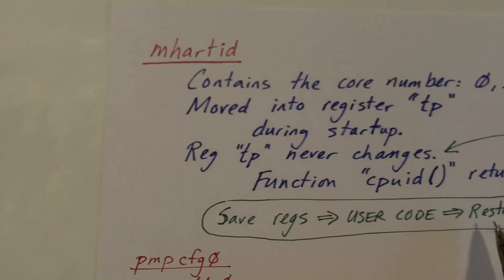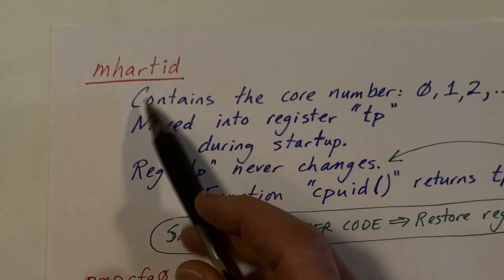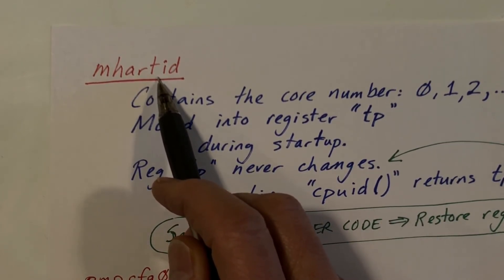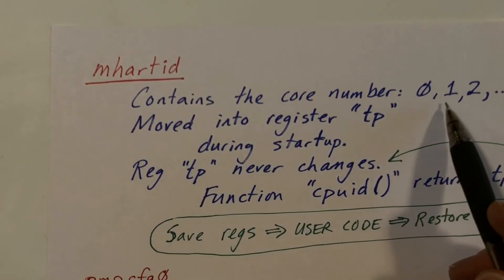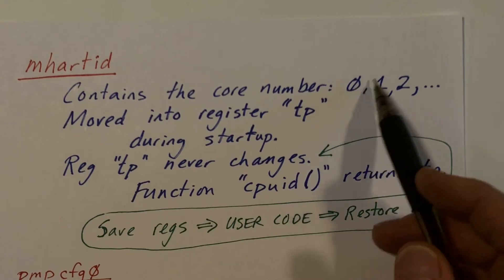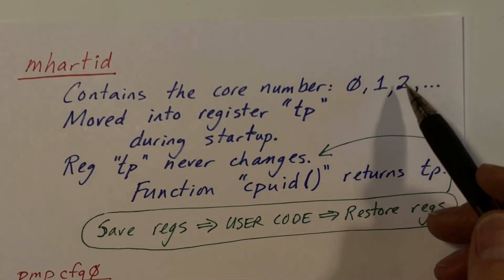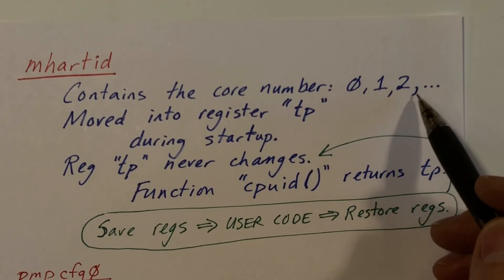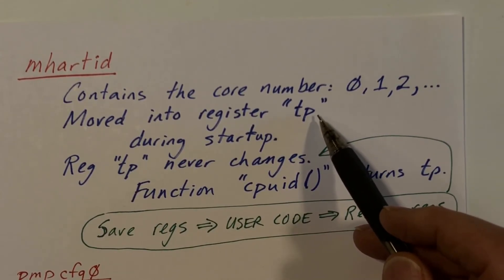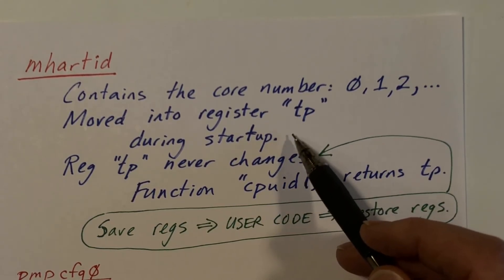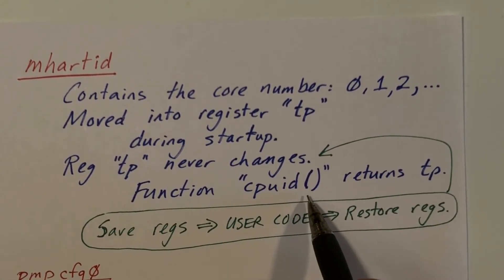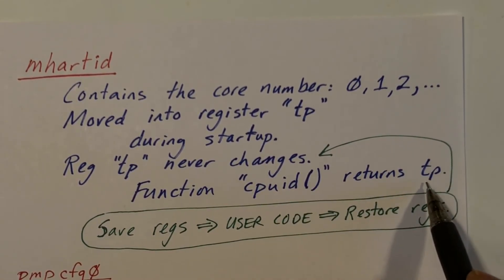Finally in this video, let me talk about three registers. The hart is synonymous with the core or processor number. The mhartid register contains the core number. Each core has its own separate set of registers. The hart ID register is hardwired and cannot be modified; it can be queried to find out what core the code is running on. The kernel immediately moves this value into the TP register during startup, and there is a CPUID function used throughout the kernel that simply returns the value in the TP register.